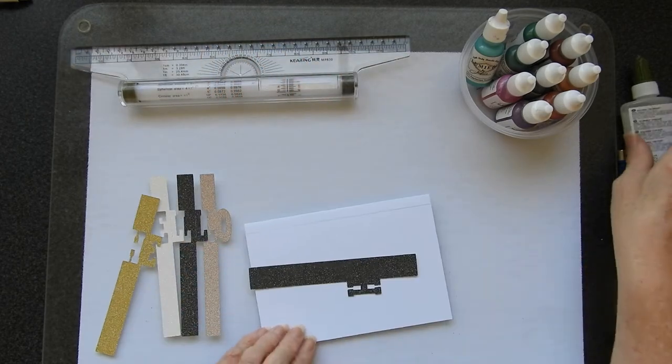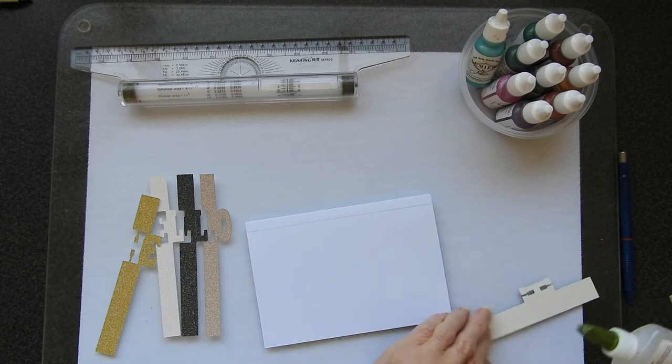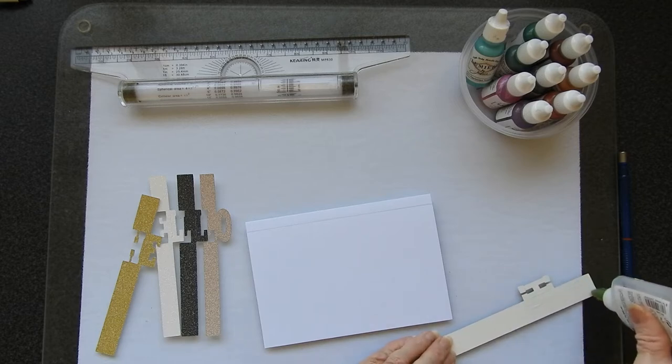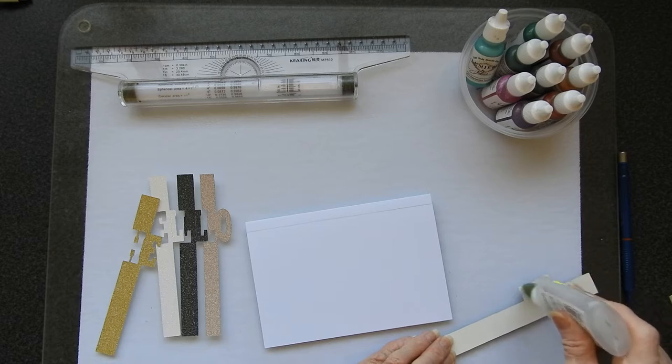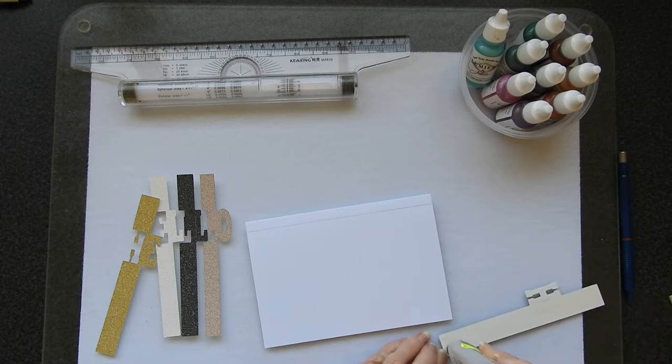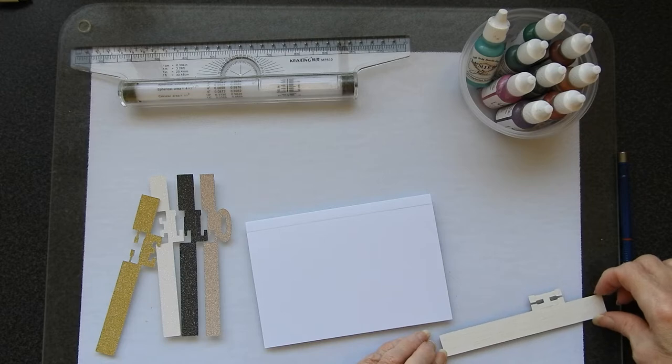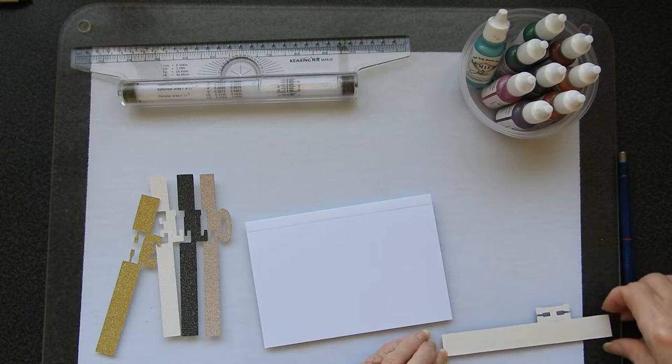So just going to put some glue on the back of this. I'm using a no wrinkle glue and this is one that I get locally. Use whatever glue you find to be the best but because my card base isn't very thick I wanted to make sure I didn't get wrinkles on it but it's a bit too fiddly to want to do it with double sided tape.